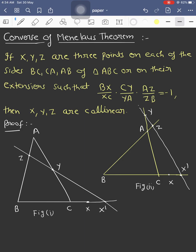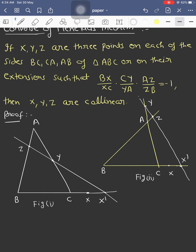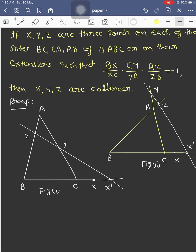We have already drawn two figures. In figure 1, the transversal cuts side BC externally and the remaining two sides AB and AC internally, whereas in figure 2, the transversal cuts all three sides externally. Okay, let's start the proof from here.